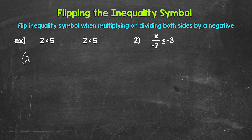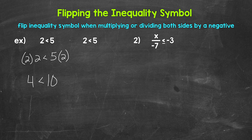Let's rewrite this with both sides being multiplied by 2. On the left, we have 2 times 2, which gives us 4. So we have 4 is less than. And then on the right, 5 times 2 gives us 10. So we have 4 is less than 10. Did the inequality remain true after multiplying both sides by positive 2? Yes, 4 is less than 10.